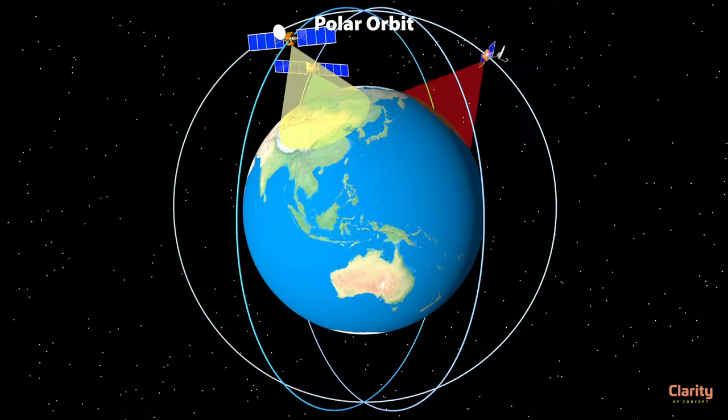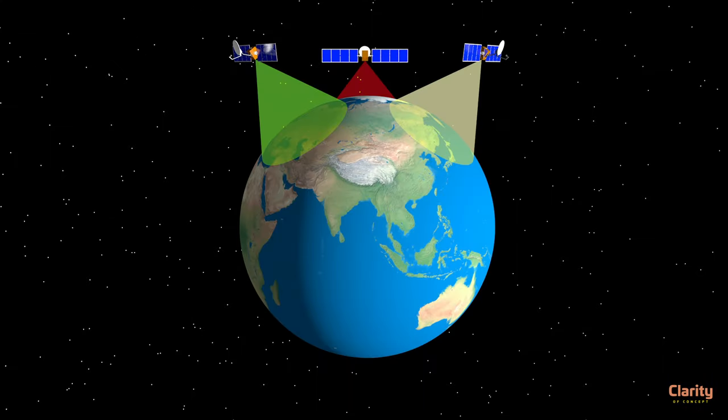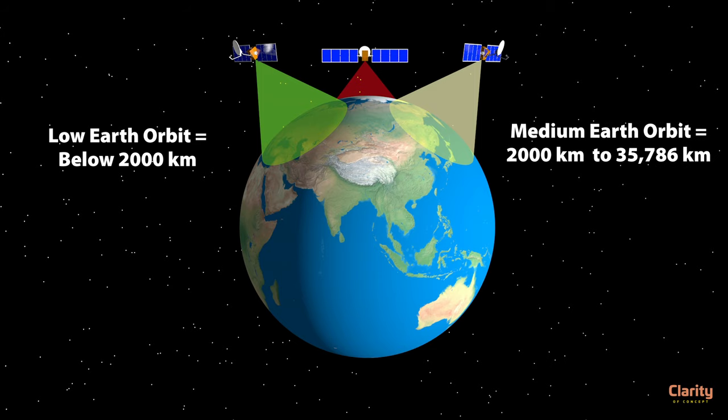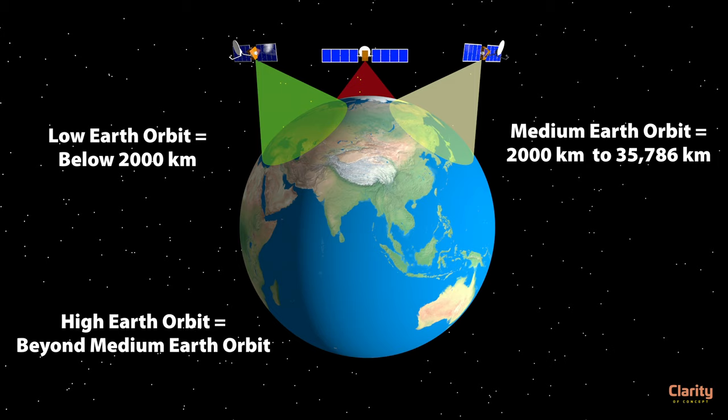As additional useful information: low Earth orbit (LEO) covers the space below 2,000 kilometers from Earth's surface; medium Earth orbit (MEO) spans from 2,000 kilometers up to 35,786 kilometers, which is the geosynchronous orbit altitude; and orbits above this are called high Earth orbits (HEO).